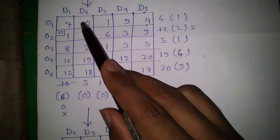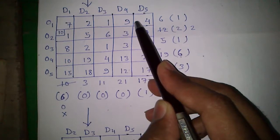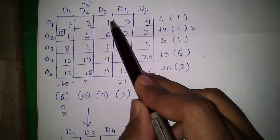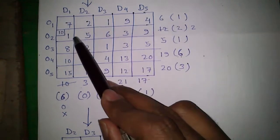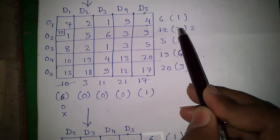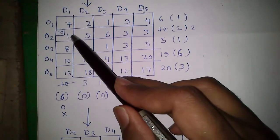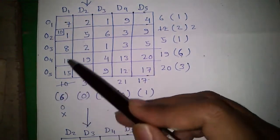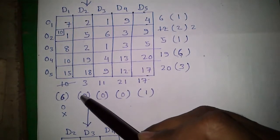Our first step is to scan each row and each column for the smallest number and the next smallest number, and subtract the smallest from the next smallest and write the value in the outside bracket. For row 1, the smallest number is 1 and next smallest is 2, so 1 subtracted from 2 gives 1, written outside. For row 2, the smallest number is 1 and next smallest is 3, so 1 subtracted from 3 gives 2, written outside. Continuing this for all rows. For column 1, the smallest number is 1 and next smallest is 7, so 1 subtracted from 7 gives 6, written outside. For D2, the smallest number is 2 and next smallest is also 2, so 2 subtracted from 2 is 0, written outside.